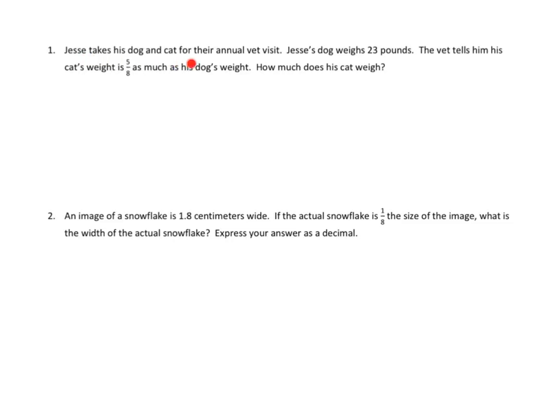Jesse takes his dog and cat for their annual vet visit. Jesse's dog weighs 23 pounds. The vet tells him his cat weighs 5 eighths as much as the dog's weight. How much does a cat weigh? Pretty simple tape diagram. We know that the whole is equal to the dog's weight of 23 pounds. We're going to partition that into eight equal parts and bracket five of those eight to find the weight of Jesse's cat. We could use eight units equals 23, then find one unit, then five units, or we can simply find five-eighths of 23.